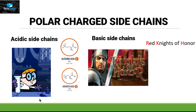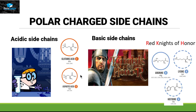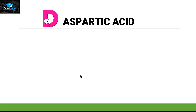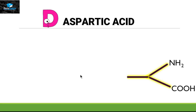In acidic side chains we only have two amino acids, and both have the word 'acid' in them — that's why we didn't generate any code for acidic amino acids. For the basic side chain, the code is 'Red Knights of Honor,' which includes arginine, lysine, and histidine. Now let's see the structures of these amino acids.